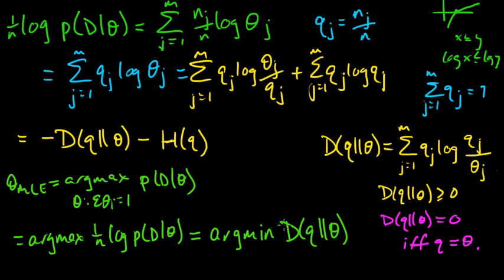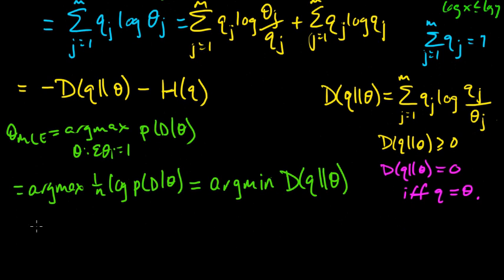So that means to minimize this, we can make it zero if we choose theta equal to q. We're minimizing over thetas. We can make it equal if we choose theta equal to q, but we can't get any lower than that because relative entropy is always non-negative. So that means that this arg min equals q. That's it, equals q.